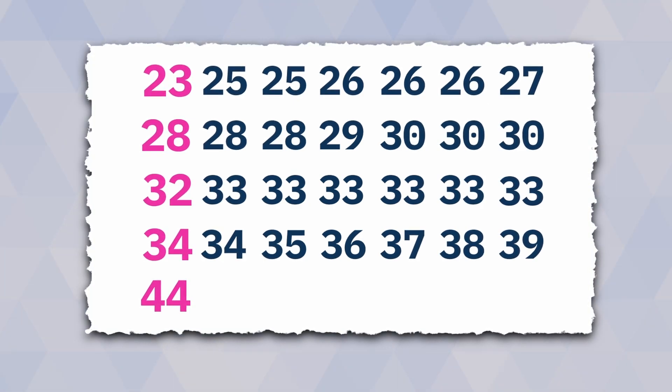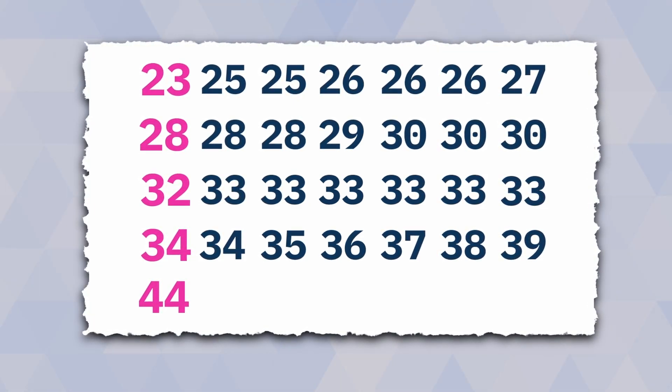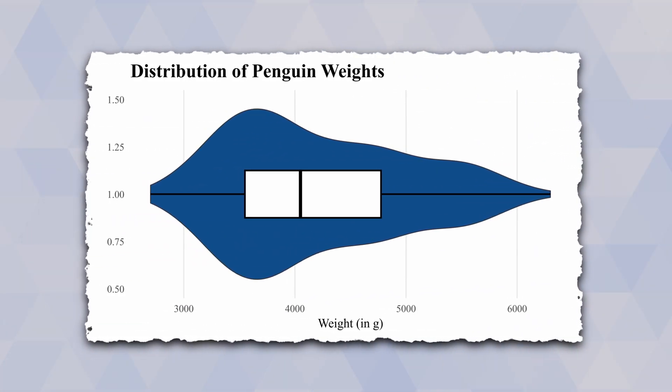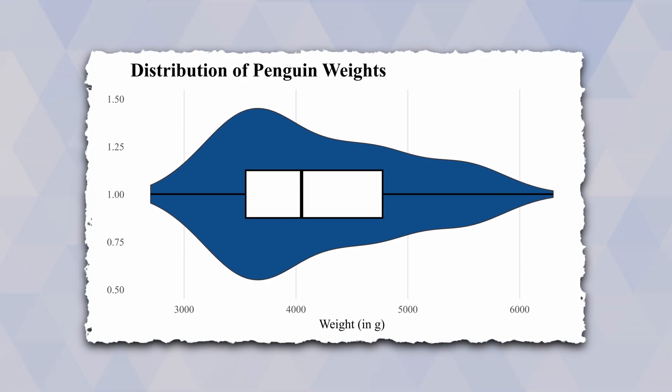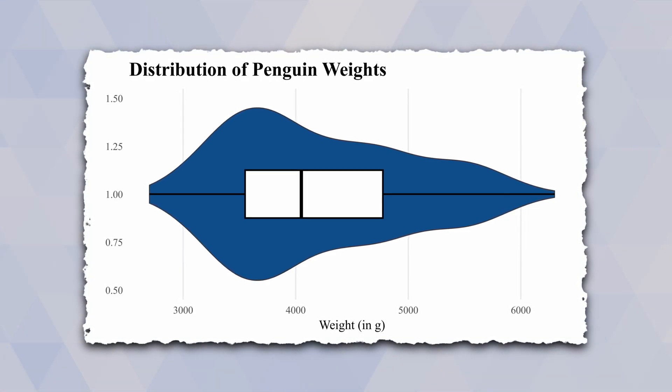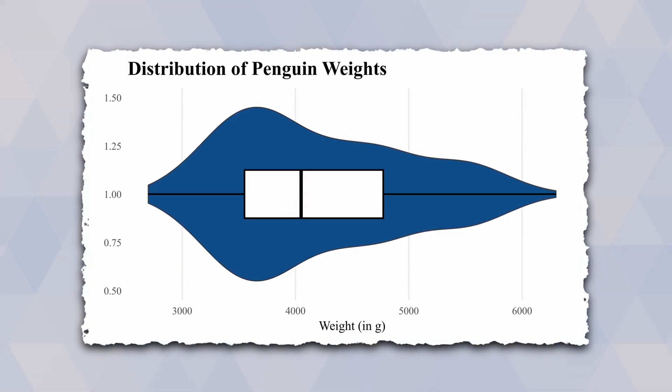So that is why it's generally not a good idea to solely rely on boxplots. Instead, you can additionally use something like violin plots that try to show the underlying distribution and not just the key quantities.